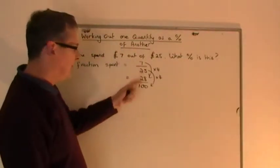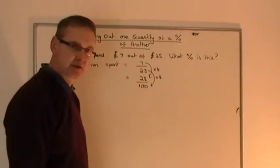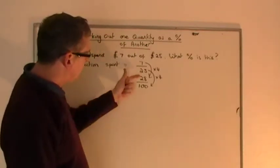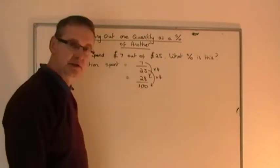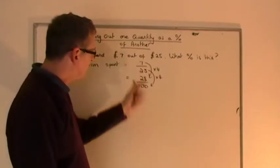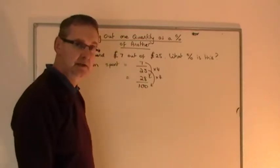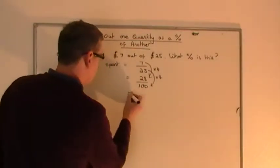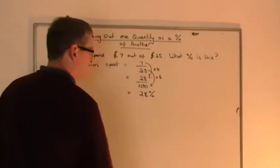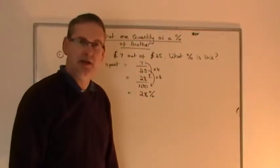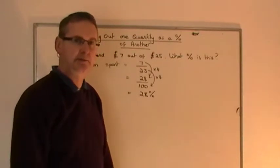So the fraction spent is 7 25ths, 7 out of £25 spent. Which is the same thing as spending 28 out of 100. 28 out of 100 is the same as 7 25ths. They look different but they mean the same thing. Once it's over 100 you can immediately say that the percentage that is spent is 28% and that's it. Simple as that.